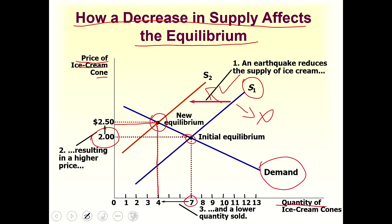So there was an earthquake, the supply of ice cream decreased, and we shifted the supply curve to the left to get a new equilibrium. At that new equilibrium the price increased from 2 to 2.5 dollars and the quantity decreased from 7 to 4. Remember: whenever the demand curve shifts right, demand has increased; left means demand decreased. Whenever the supply curve shifts right, supply has increased; left means supply decreased.